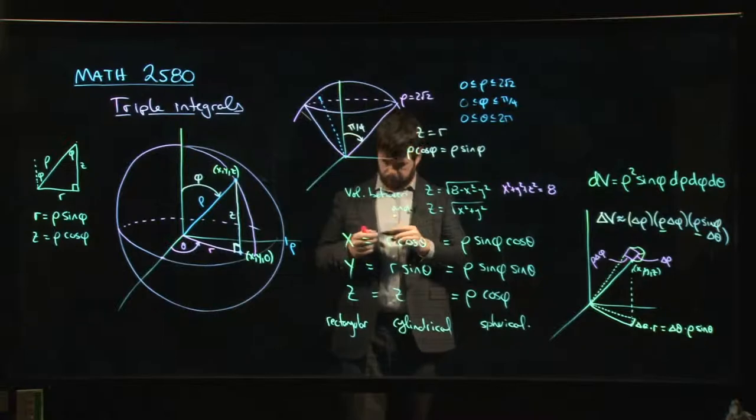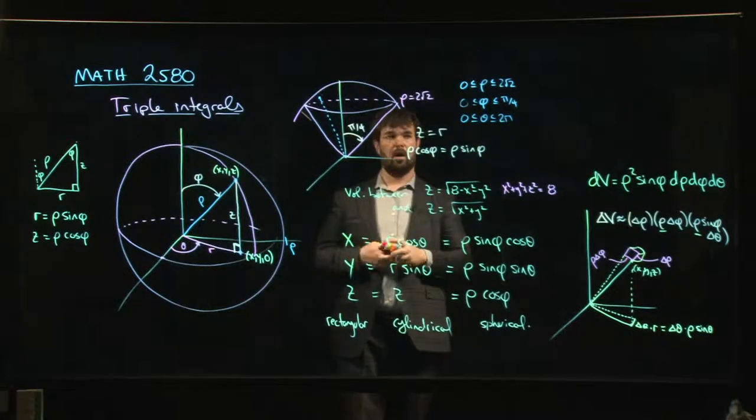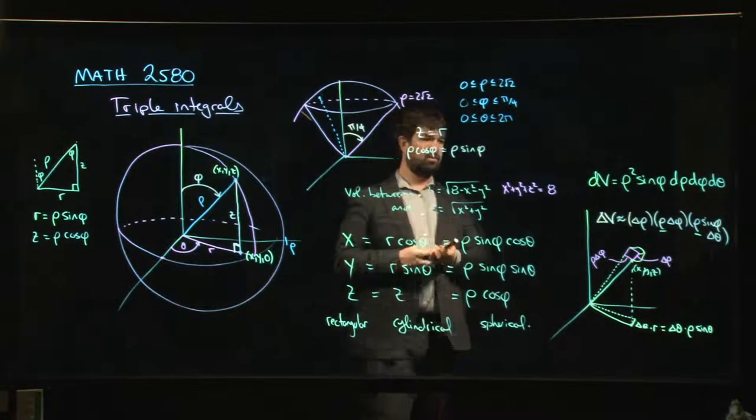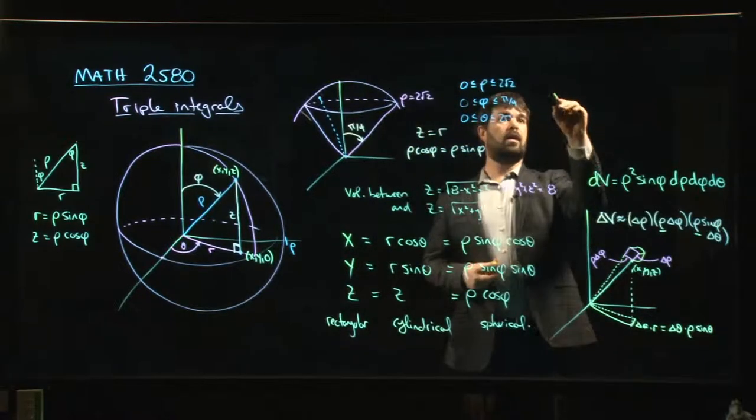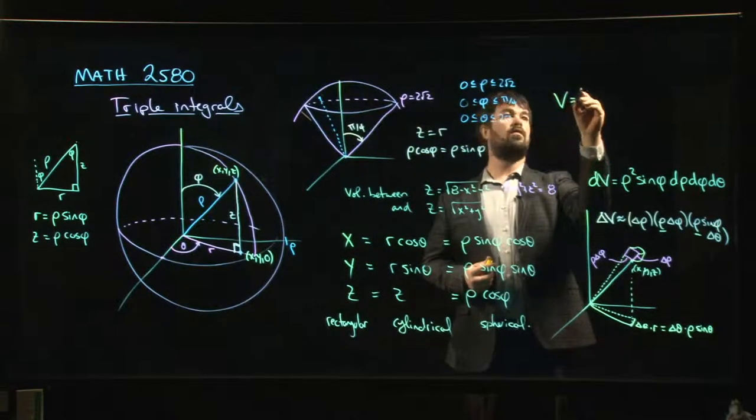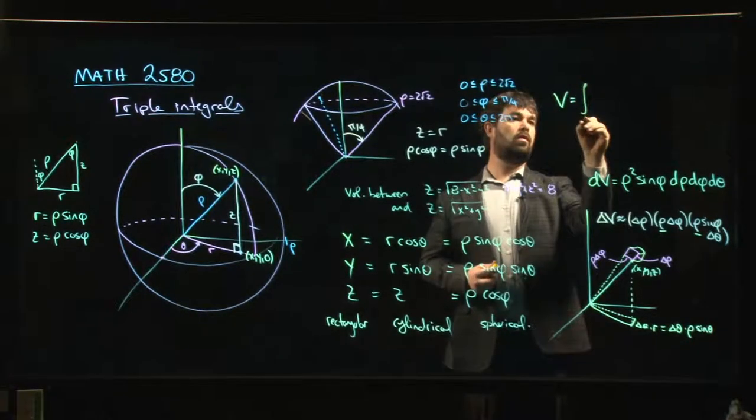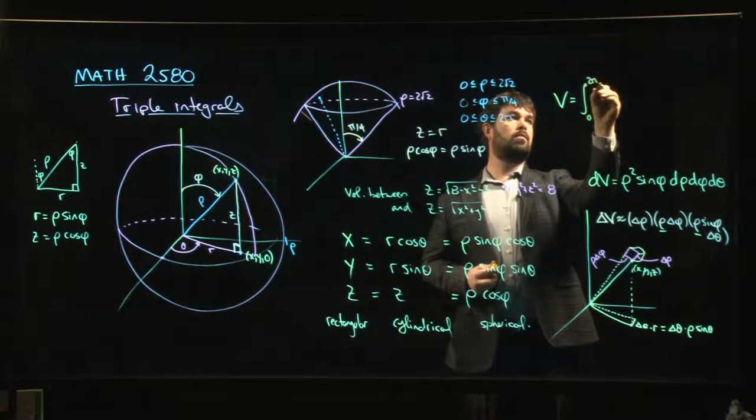Right? And theta can run the full range from 0 to 2 pi. And that's going to generate our object. So the volume, and again, I'll just set it up. I'll leave it for you to finish because I need to wrap up here because I'm over time. The volume is going to be the integral from 0 to 2 pi,